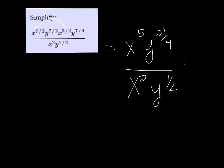And then we'll do a little subtraction here. We get x cubed and then 21 over 4 minus 1 half is 19 over 4. So we get y to the 19 fourths. And that's all there is to it. Just need a good calculator.